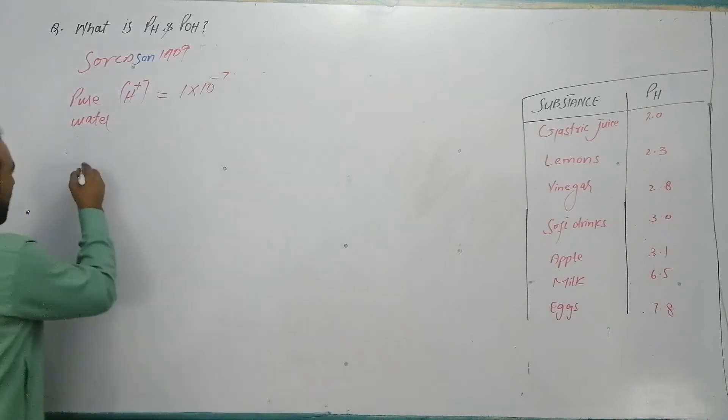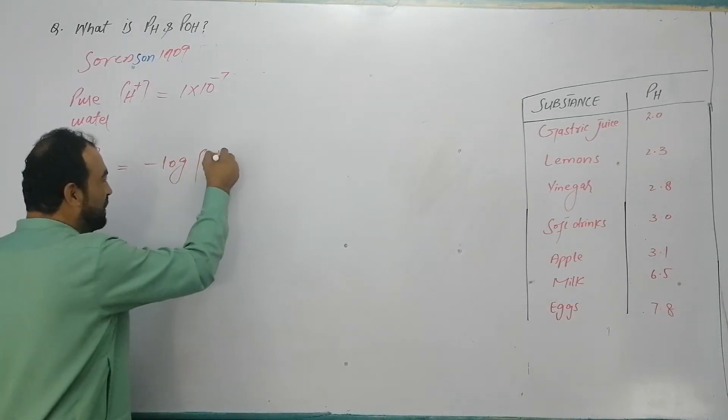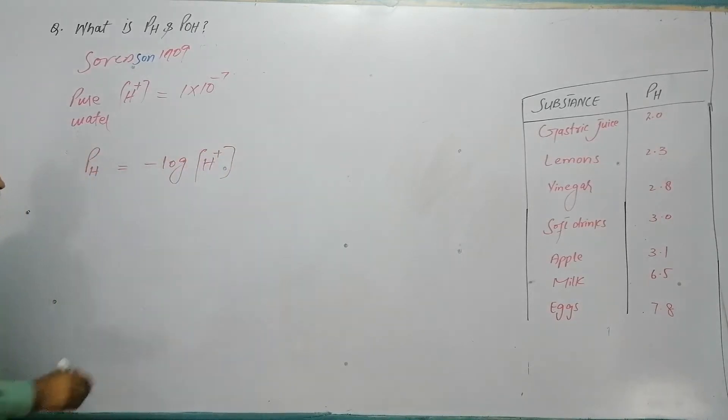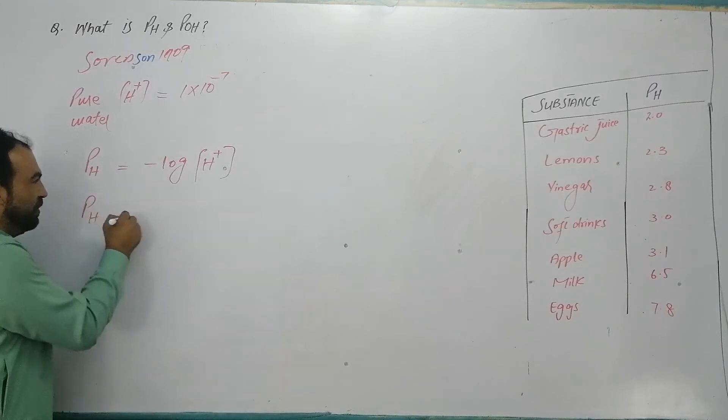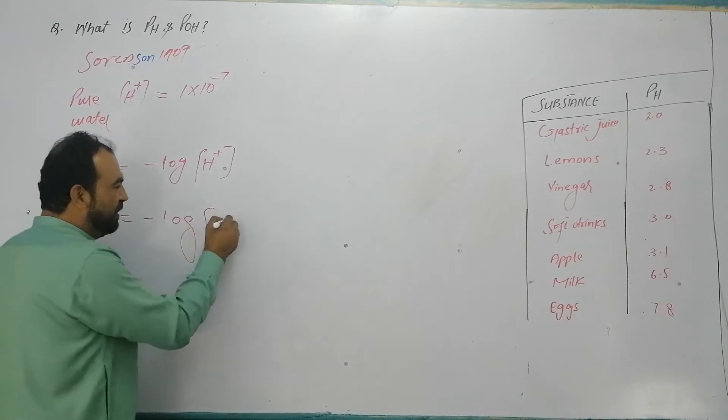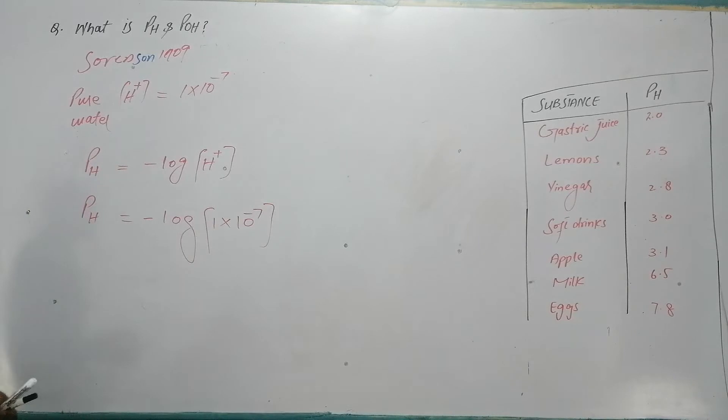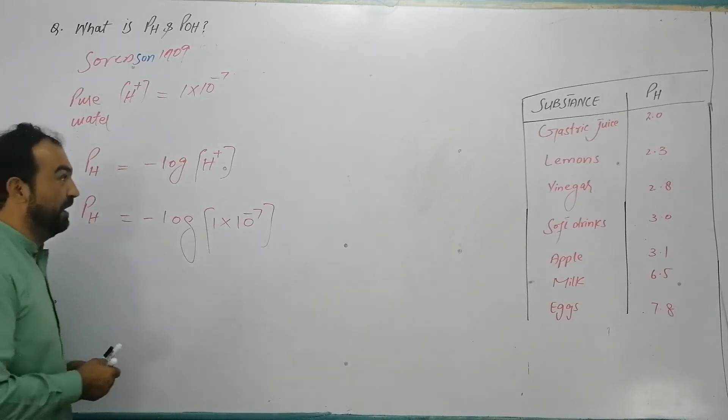How did he convert it? He took negative log of concentration of H positive ions. It is known as power of hydrogen ions or pH. What is pH? It is negative log of concentration of H positive ions.